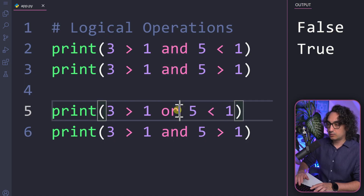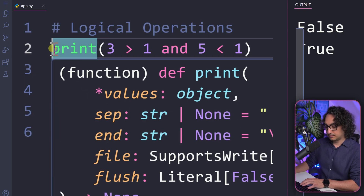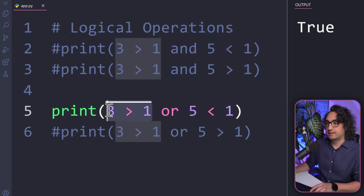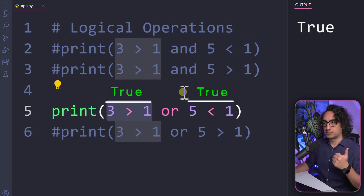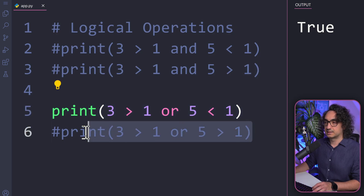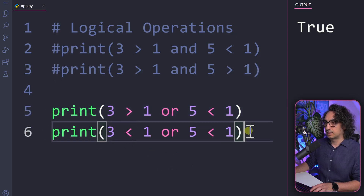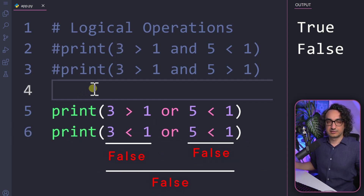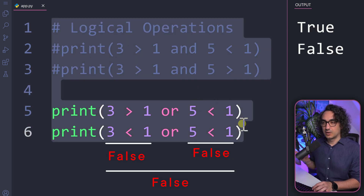Now let's try the 'or' operator. Using 'or' on the first example — where one condition is true and the other is false — we get true, because all we need is one true. If we make both false, like saying three is also less than one, and execute, we get false — because neither is true.